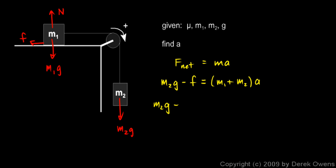So I can rewrite my equation like this. m2g equals mu m1g. And that's a minus sign right there. m2g minus mu m1g equals m1 plus m2 times A.